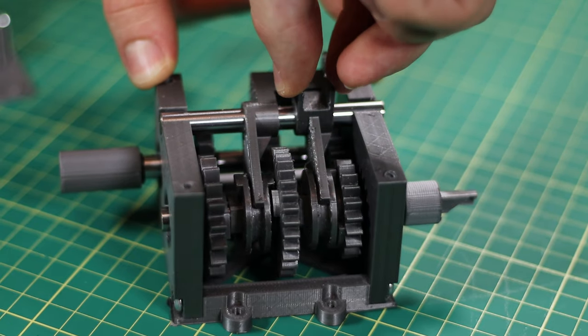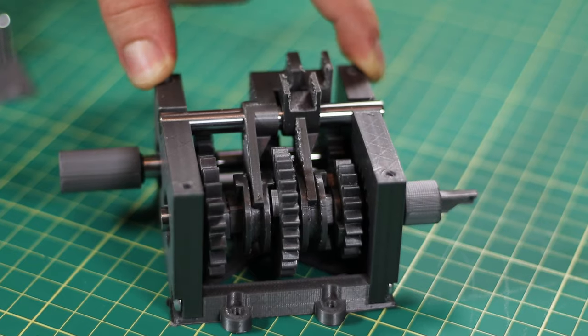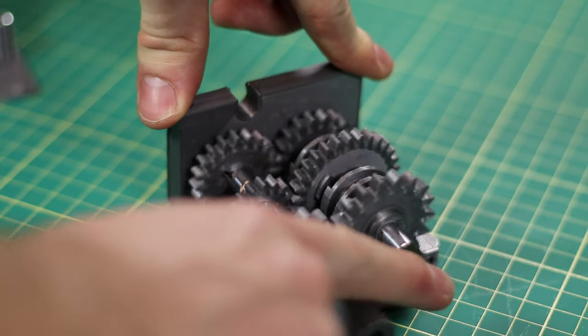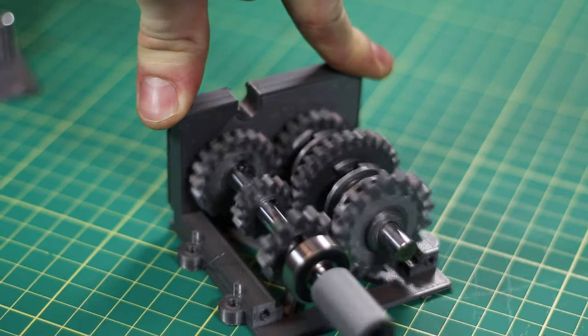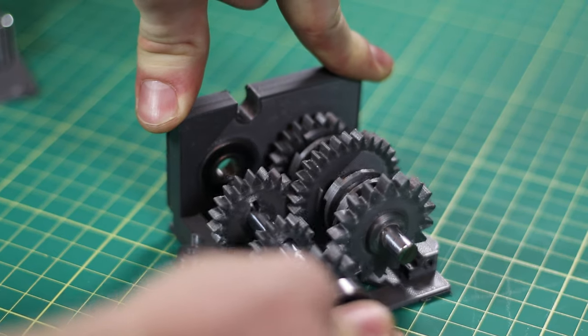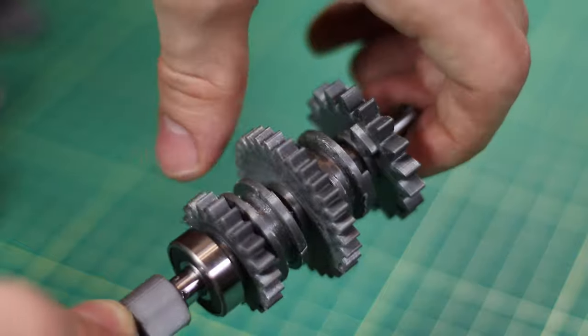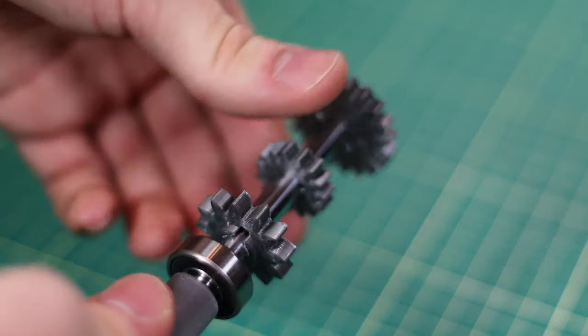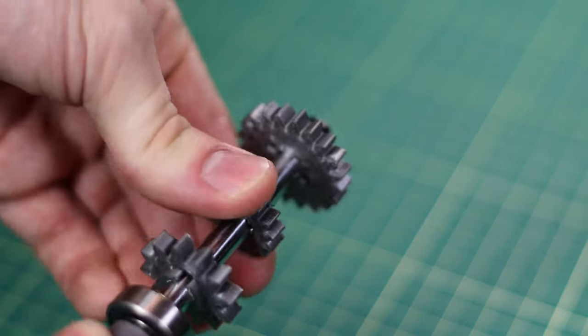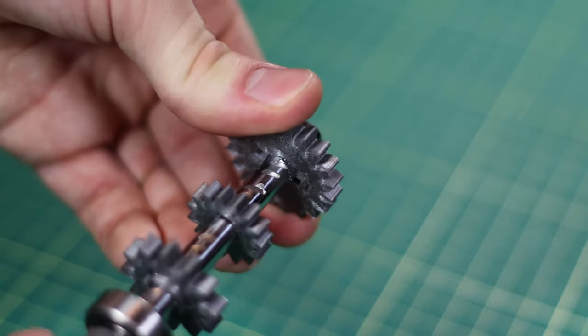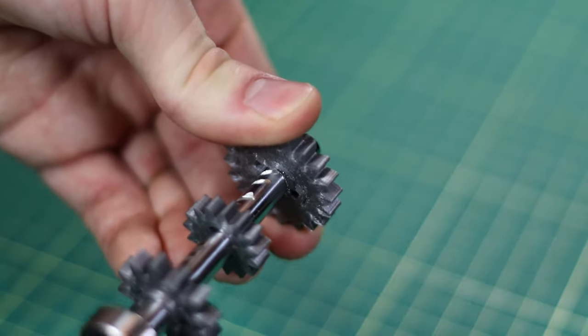The shifter forks still feel pretty good and they move really easily, and the gears feel like they spin just fine. But let's take it apart and have a closer look at each of the shafts. Everything on the output shaft still seems to be fine and well, nothing looks out of place. However, things on the input shaft are a little bit of a different story. It looks like third gear suffered a bit of damage.